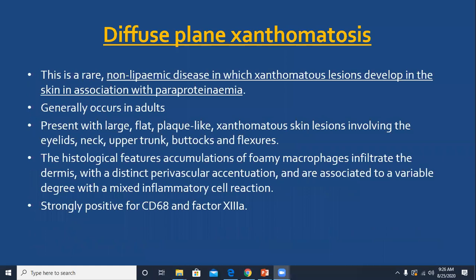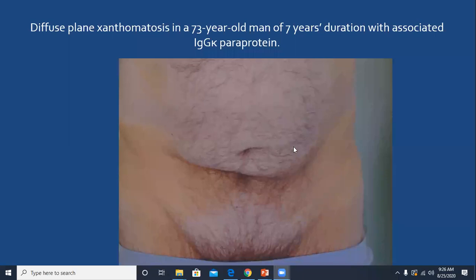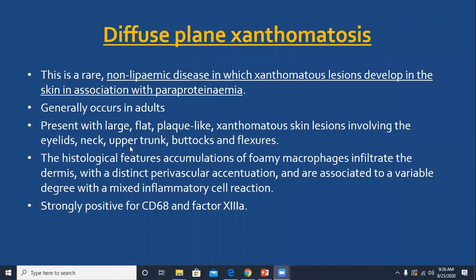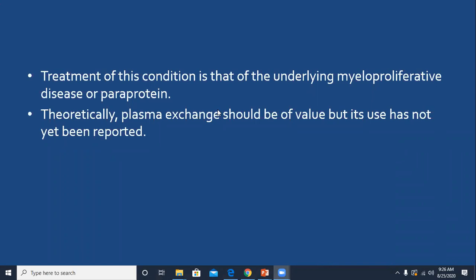Diffuse plane xanthomatosis is a rare non-lipemic disease in which xanthomatous lesions develop in the skin and are associated with paraproteinemias. It is characterized by sheets of yellow plaques or xanthomatous skin lesions. Treatment is directed at the underlying myeloproliferative disease or paraprotein.